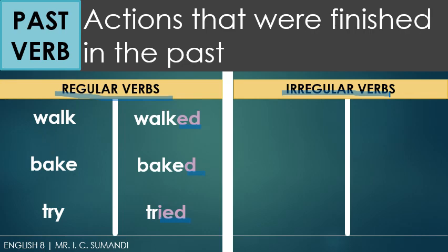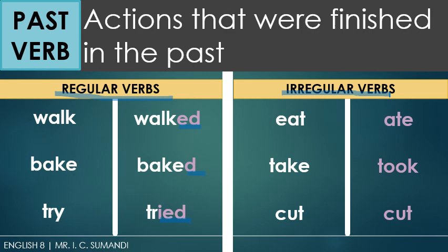Irregular verbs, on the other hand, are words that usually have different spellings when changed to their past form. Examples of these are eat, take, and cut. The past tense of these verbs are ate, took, and cut. Notice that there is one verb here that did not change the spelling. There are a few verbs under the irregular verb category that don't change their spelling when changed to their past form.